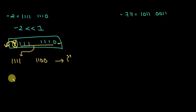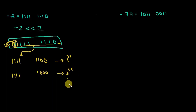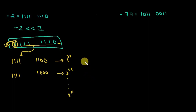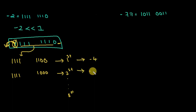After the first shift we get 1 1 1 1 1 1 0 0. After the second shift it becomes 1 1 1 1 1 1 0 0 0, and so on. You can easily see that shifting minus 2 left once gives minus 4, and again gives minus 8 — but is this rule true for all shifts and all numbers?